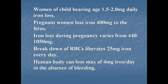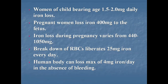Breakdown of RBCs normally results in a liberation of about 25 mg of iron every day, but it is reused for synthesis of new hemoglobin. The human body can lose a maximum of 4 mg of iron per day in the absence of bleeding. Excessive loss is seen in menstrual blood in women and in men from gastrointestinal bleeding including peptic ulcer, diverticulosis, or malignancy. Certain diseases associated with significant blood loss include peptic ulcer, hemorrhoids, menorrhagia, hookworm infection, and aspirin intake.